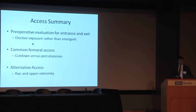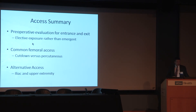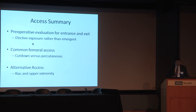Access summary: preoperative evaluation for an entrance and exit strategy is key. Elective exposure is ideal rather than emergent — think ahead, have a plan B, and don't get yourself stuck in a bleeding emergency. Common femoral access is still the workhorse; cut-down versus percutaneous — either is acceptable, and there's nothing wrong with a cut-down. Alternative access options are increasingly common as we increase the complexity of endovascular approaches. Upper extremity work can be done through the brachial or axillary; we've had thoracic stent grafts placed through the subclavian by conduit. Do it electively, not emergently.